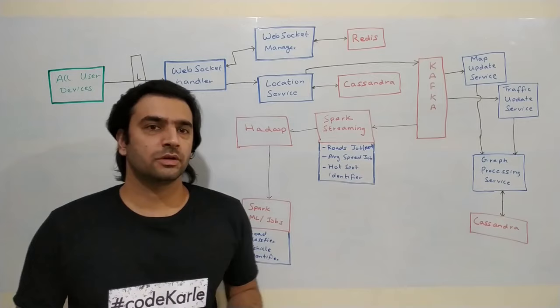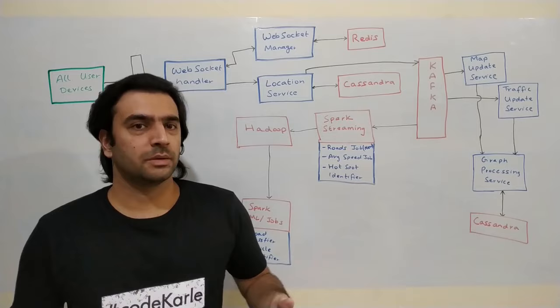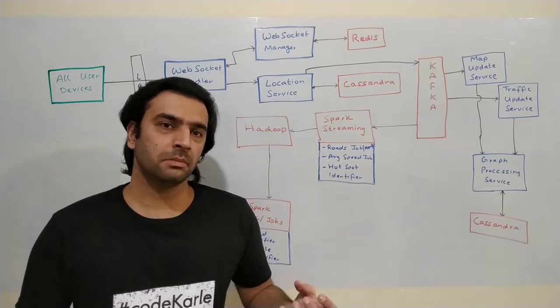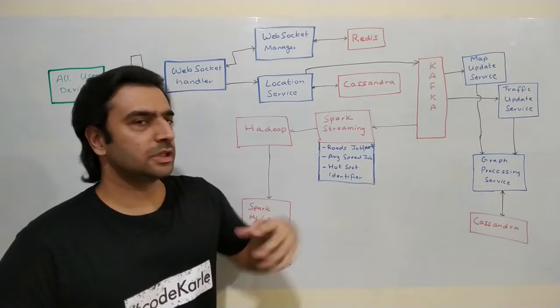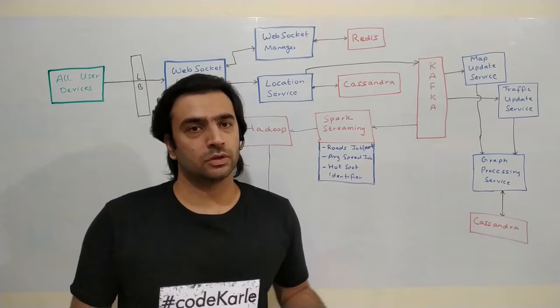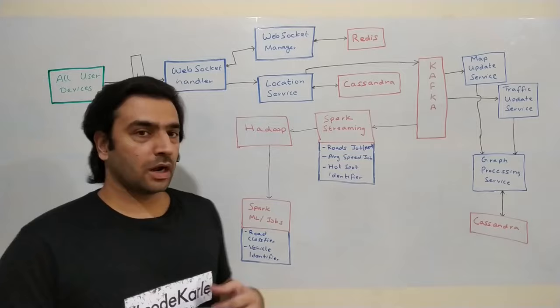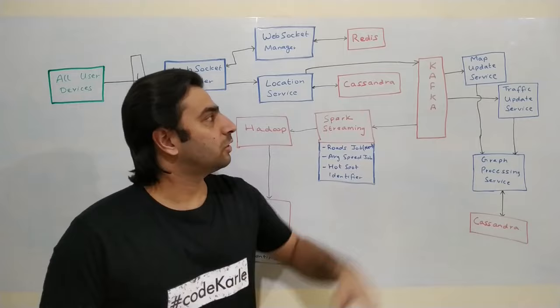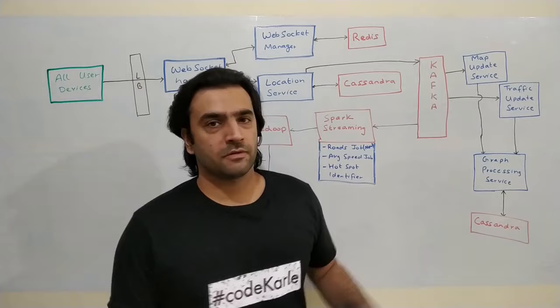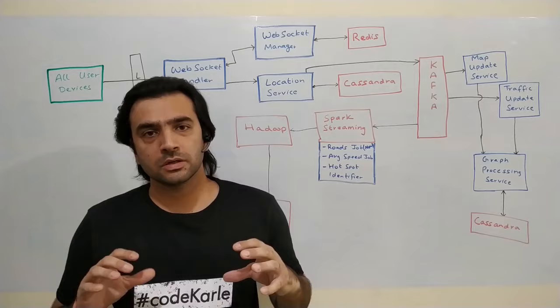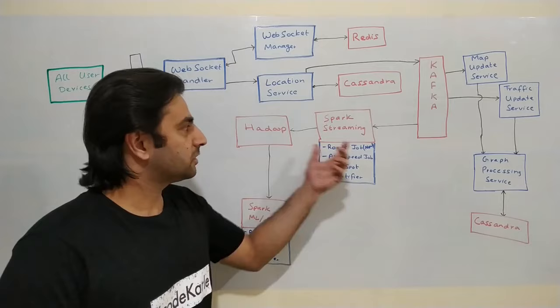The location service ingests location-related information — user ID, timestamp, coordinates — and puts it into Cassandra as a permanent data source tracking which user was at what location at what point in time. This covers all users worldwide, not just those actively navigating. It also puts all those pings into Kafka, which are then read by a fast streaming consumer that does a lot of calculations.